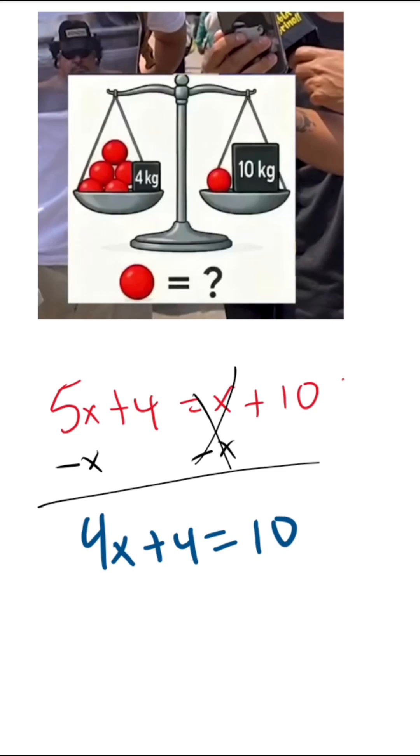Now I have to subtract 4 on both sides. I'm going to subtract 4 here, subtract 4 here. When I do that, the 4 is going to cancel, and I'm left with 4x equals 6.